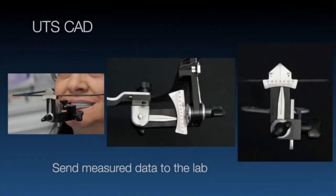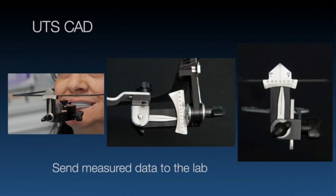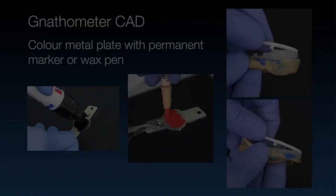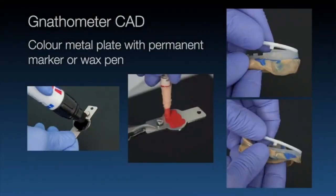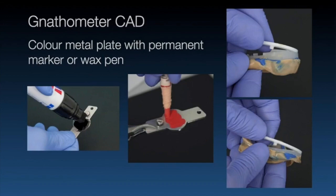We then refine the UTS card recording — pop it back in with the bite fork, tweak it, double-check everything is still correct after the impressions. For the tracing: we take the shims off and replace them with the little metal tracers. The shims are two millimeters high. The screw has a chamfered end — when you screw it through, the tip protruding equals four millimeters, the same as the two shims. So you're not changing the OVD.